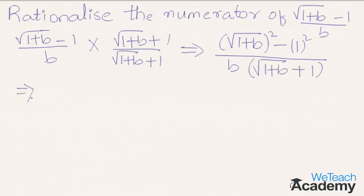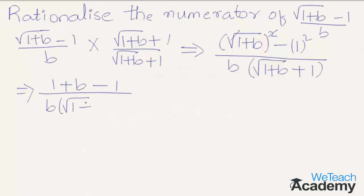That implies here in the numerator we can cancel the square root and we get the result as 1 plus b minus 1, divided by b into under root 1 plus b plus 1.